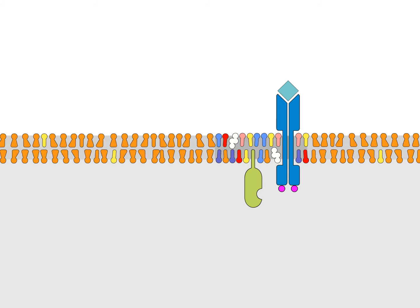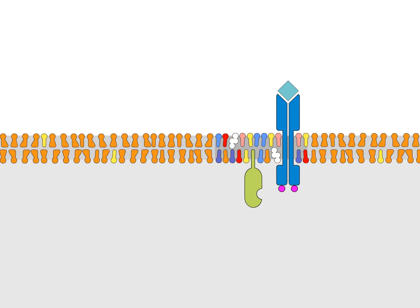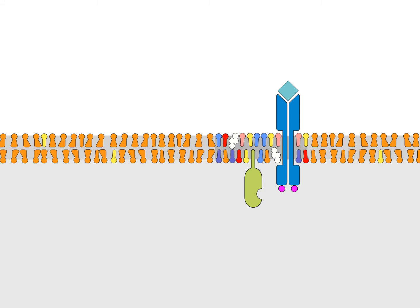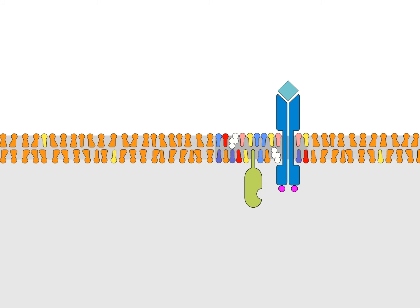Those signaling pathways often involve another important lipid raft component, phosphatidylinositol, a membrane phospholipid present on the interface of the membrane and concentrated in lipid rafts. Phosphatidylinositol plays two important signaling roles when phosphorylated.